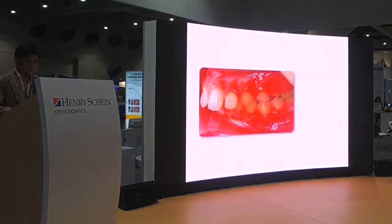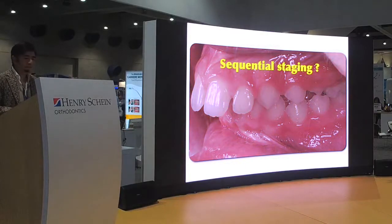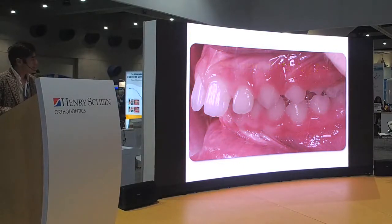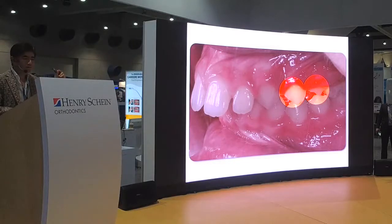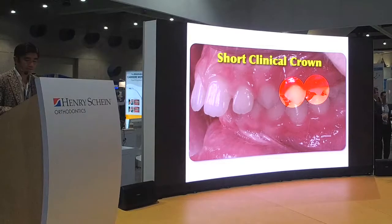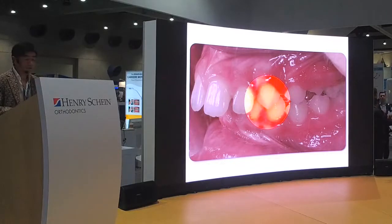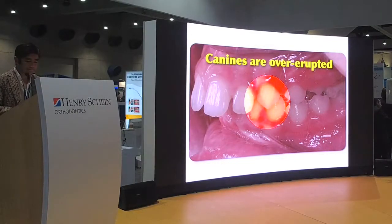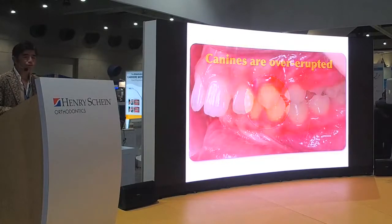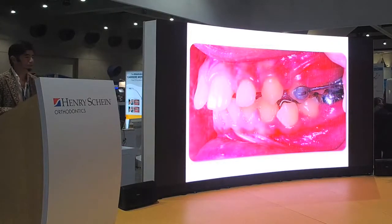One issue with sequential staging with aligners is that you want to use Class 2 elastics and move teeth one by one. But how do you grab those teeth? With very short clinical crowns, aligners cannot grab or hold very precisely — it's impossible for aligners to control three-dimensional positions. The second problem is that the canine is over-erupted and very deep. These situations are why we usually place the motion appliance on the premolars, because we don't want any extrusions during the Class 2 elastics.